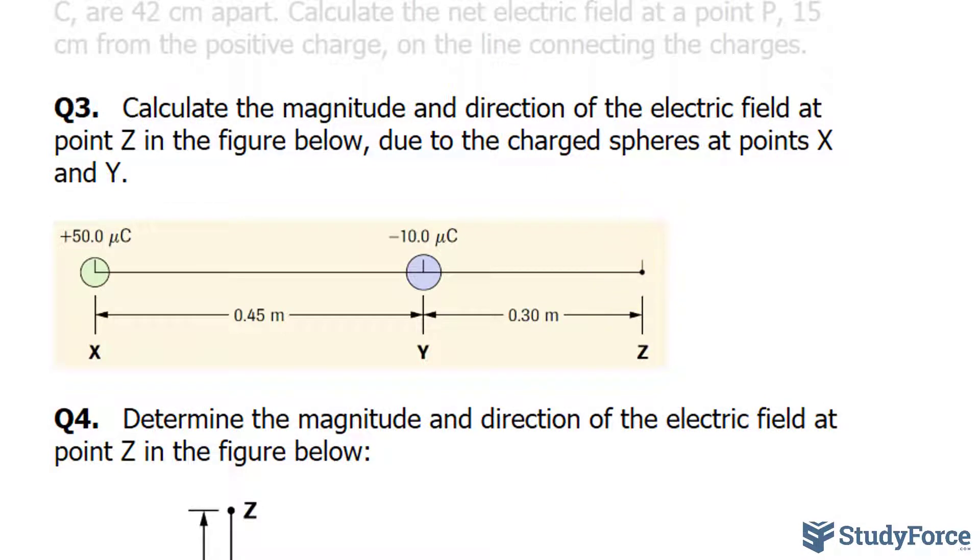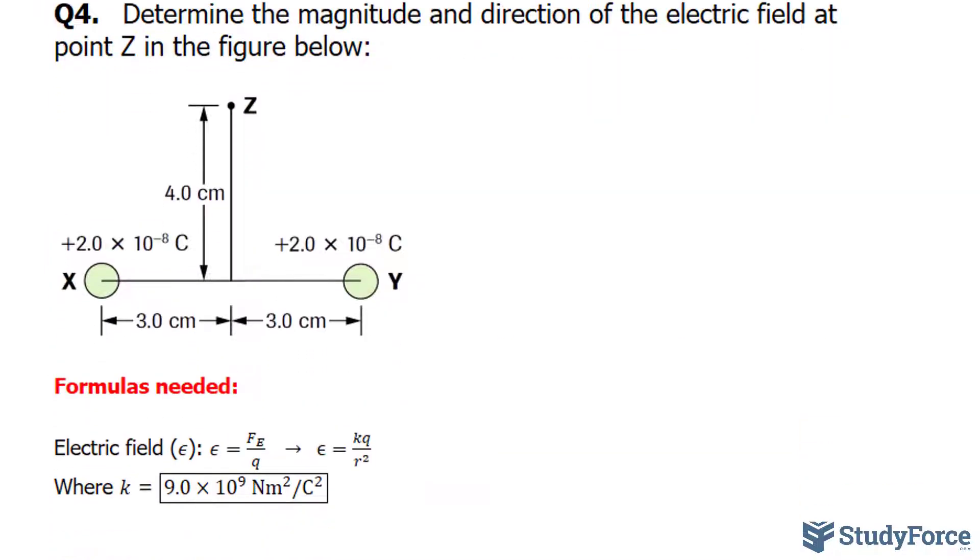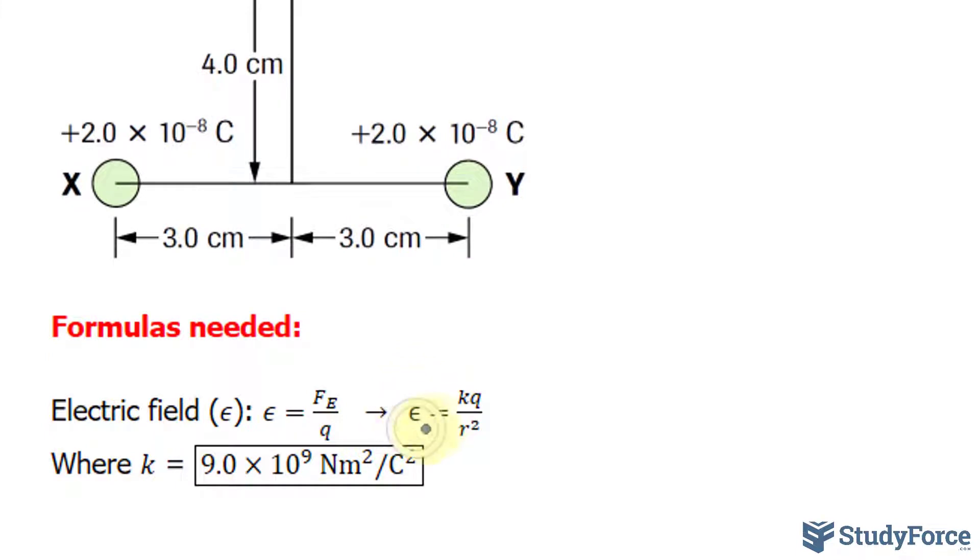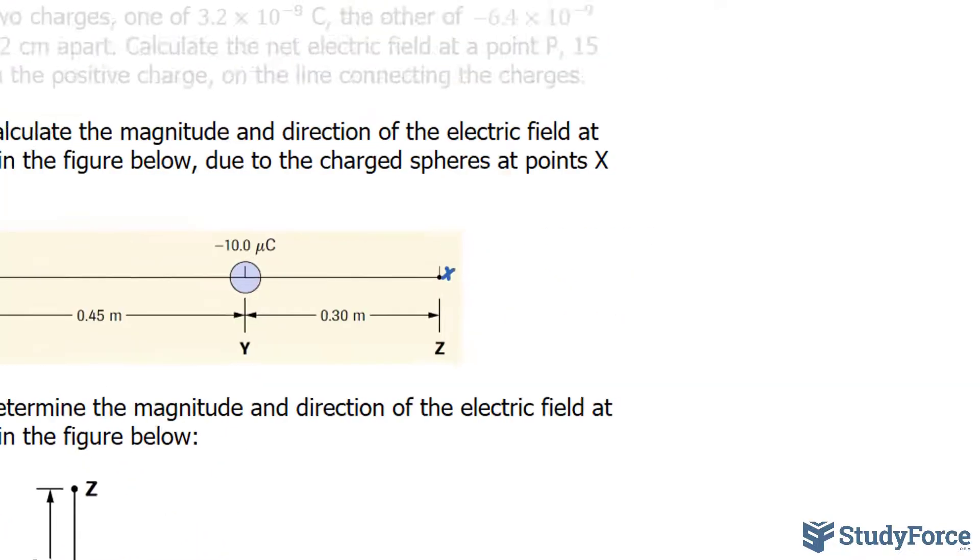So we have a test charge here and whenever we're doing these problems the test charge is assumed to be positive. To do these types of problems we need the following formula, where the electric field represented by this Greek letter epsilon is equal to k times q divided by r squared, where r represents the distance between the charges. So let me write that down for reference.